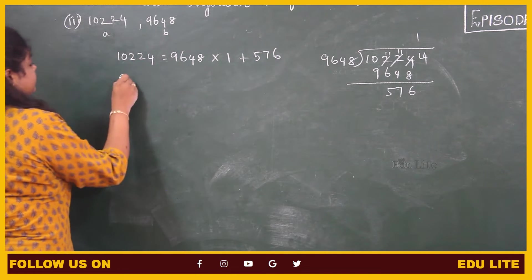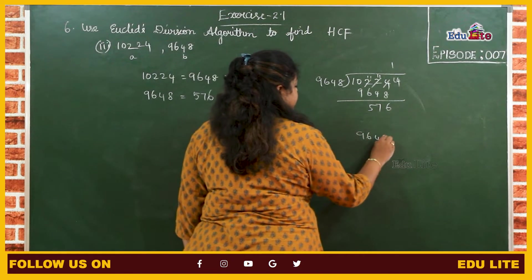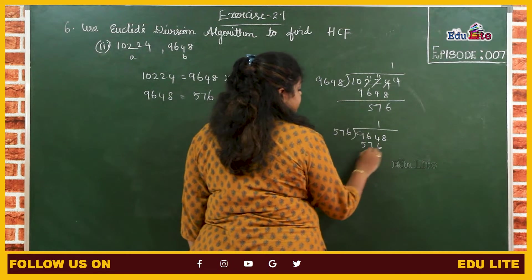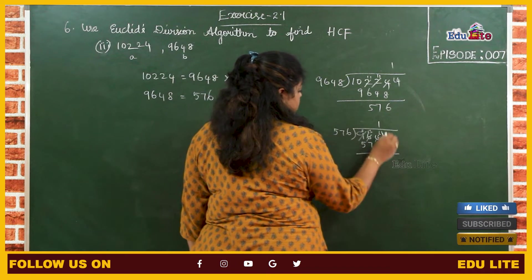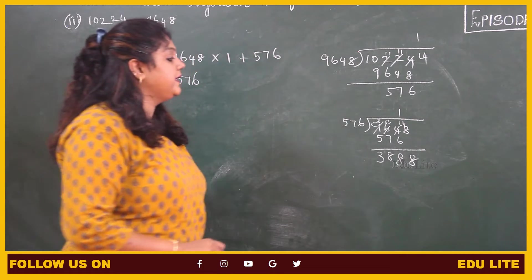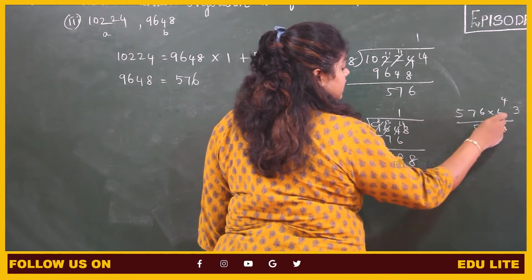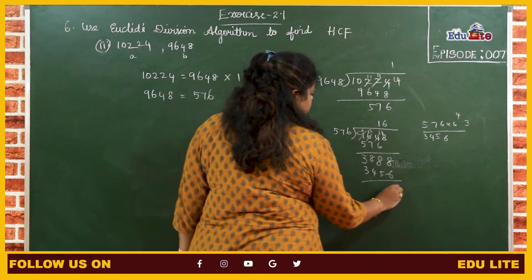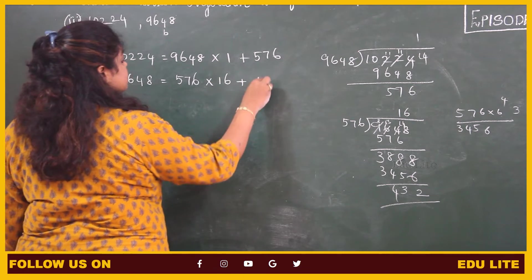The remainder is not 0, therefore 9648 is divided by 576. 9648 divided by 576: let us choose 16 times. So 576 into 16 plus 432.